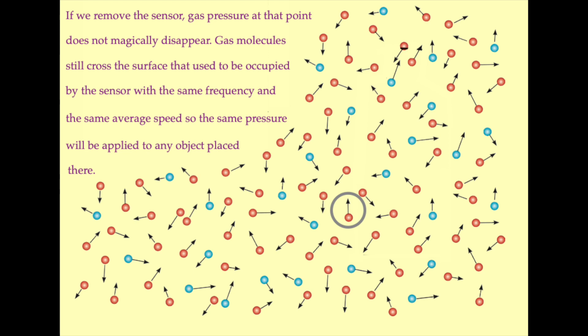It follows, therefore, that gas pressure does not require a physical surface in order to exist. It may be calculated across any nominal surface.